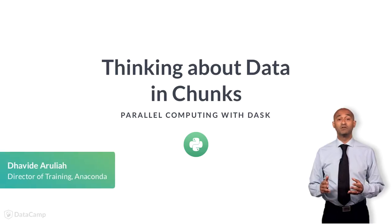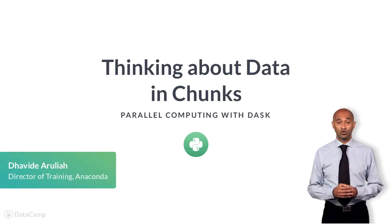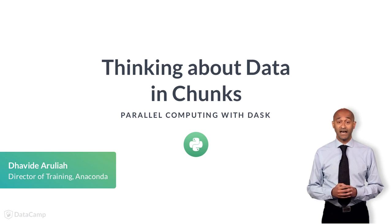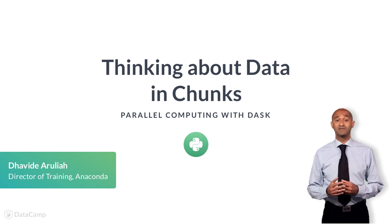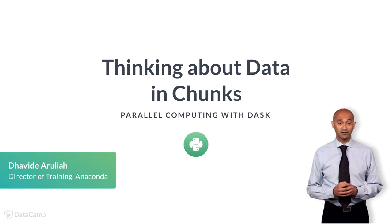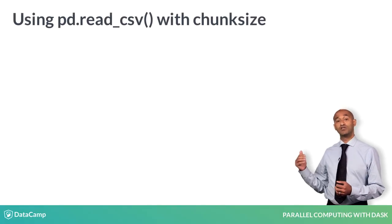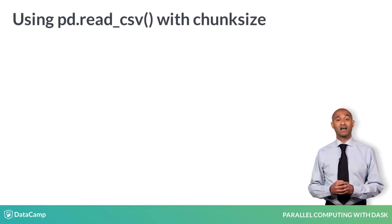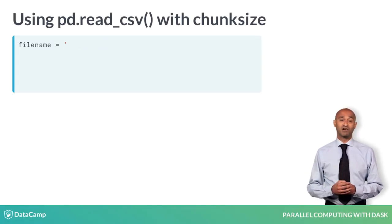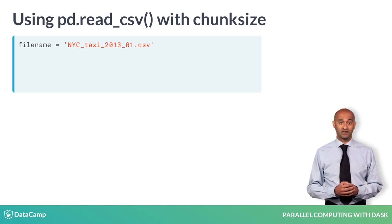We've seen that available memory and storage restricts datasets that can be analyzed. A common strategy is to subdivide datasets into smaller parts. We'll use a 200,000-line file summarizing New York City cab rides from the first two weeks of 2013.